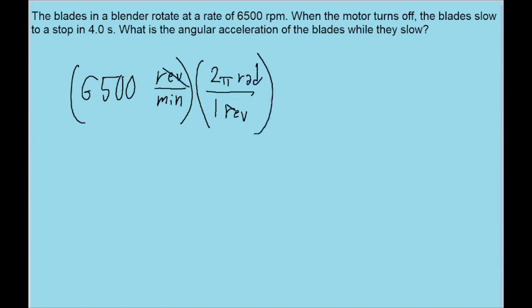This way, the revolutions cancel out and we end up with a value in terms of radians. And I will also convert from minutes to seconds by using the conversion factor of one minute per 60 seconds. This will cancel out the minutes and replace them with seconds.